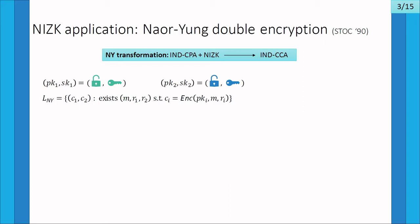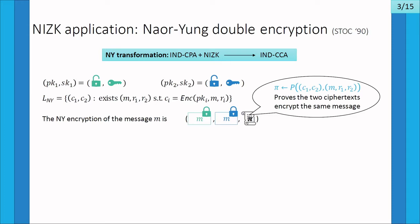We use a non-interactive zero-knowledge argument system for the language which certifies that the same message M has been encrypted under both public keys. To encrypt message M under the Naor-Yung transformation, we encrypt the same message with the different public keys and compute a proof using our NIZK that certifies the fact that the same message M has been encrypted in both ciphertexts.